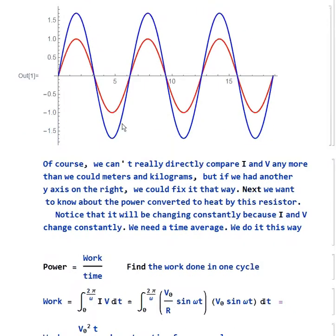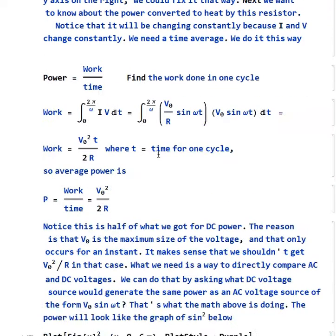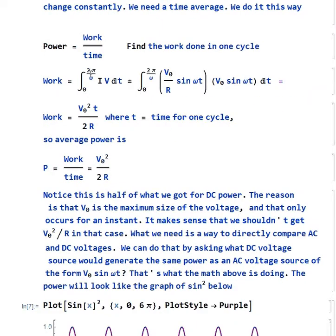Now, they are changing constantly, and that's the alternating current part. What we really need to do is get a time average of this. And the way we can do that is take advantage of the fact that power is work divided by time, and we can just look at the work done in one cycle. So that would be integral from zero to 2π/ω, which is one full cycle, of I times V, our power, with respect to time. We put in the values for I and for V, and we get really a pretty simple integral. It's integral of sine squared. And what we end up with is V₀²t/2R. T is our time for one cycle again. So our average power, we divide by that T, and we would say it's V₀²/2R.